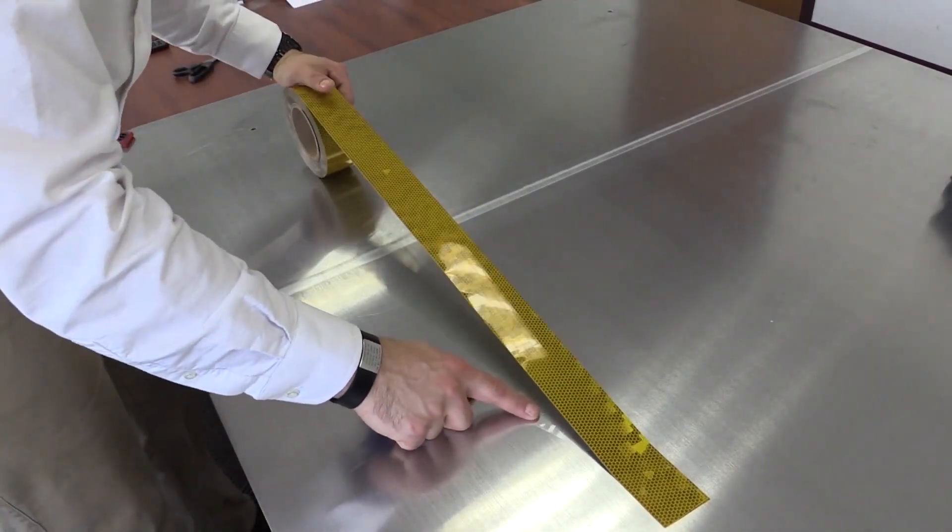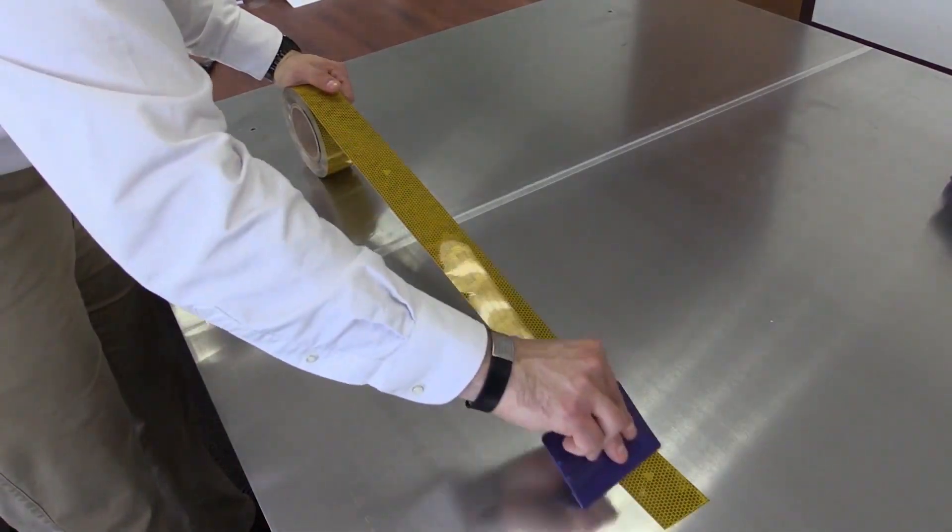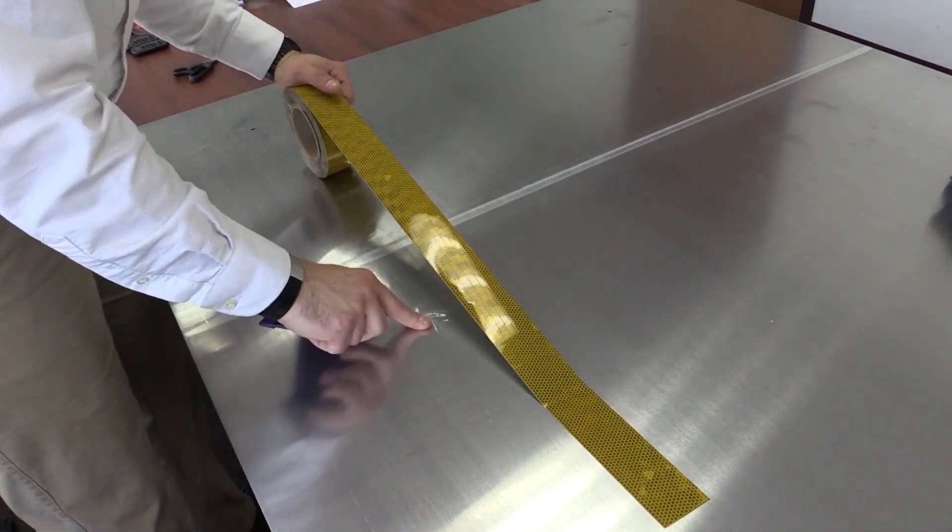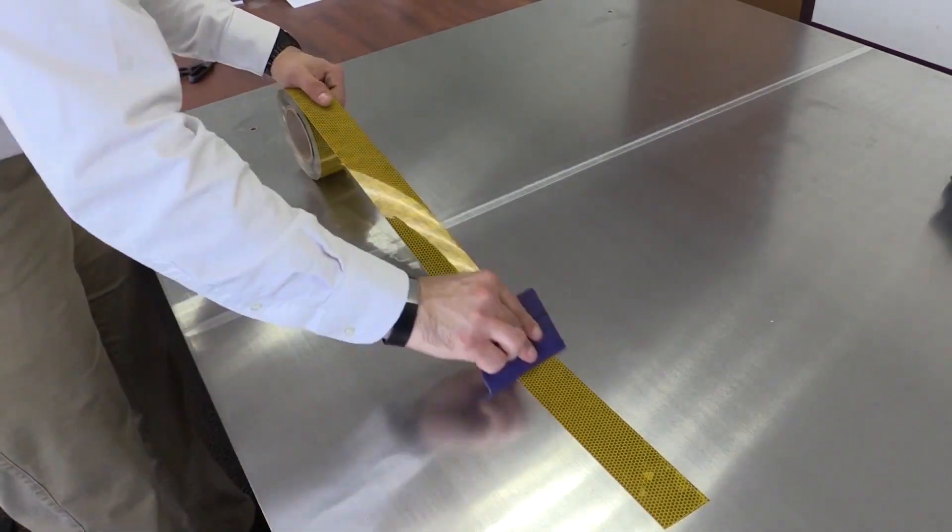So we're going to continue applying. Now I'll start pulling back the liner. You'll notice I'm pulling back the liner as parallel as I can to the tape itself, and this just helps to prevent any tearing that may happen during the process.